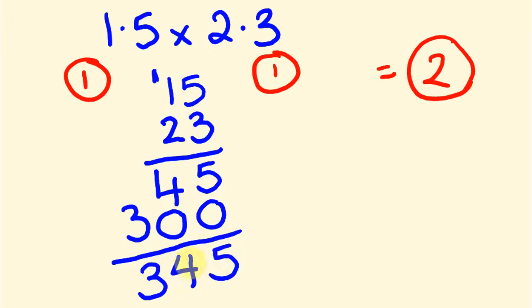So where we have 345, 2 of these numbers should be behind the decimal place. So 1, 2. Our answer is 3.45. And that's how you work out where the decimal place goes. That's not too bad, right?